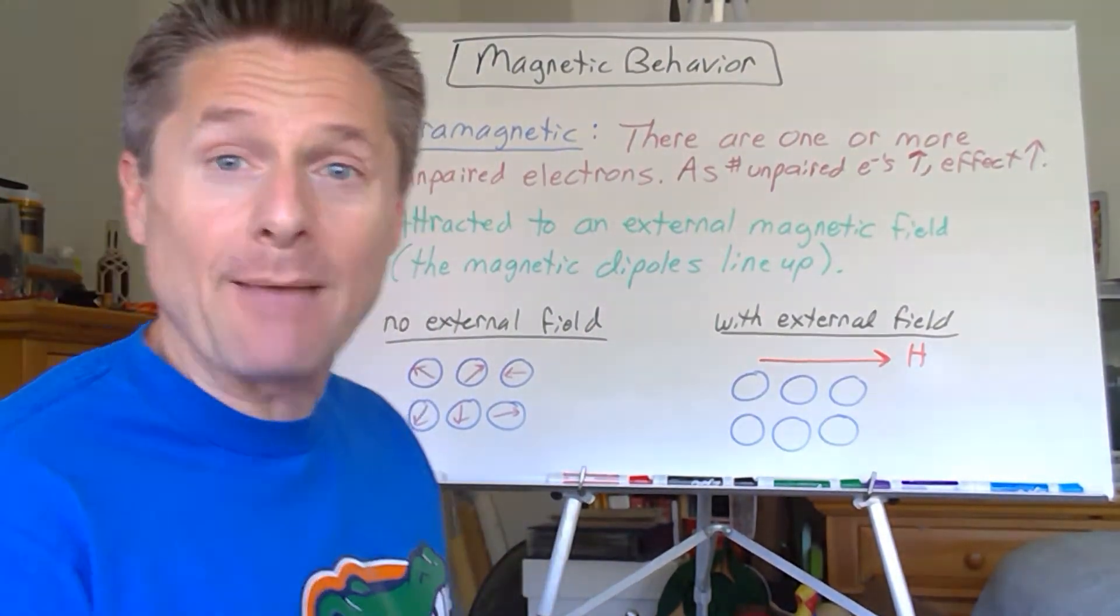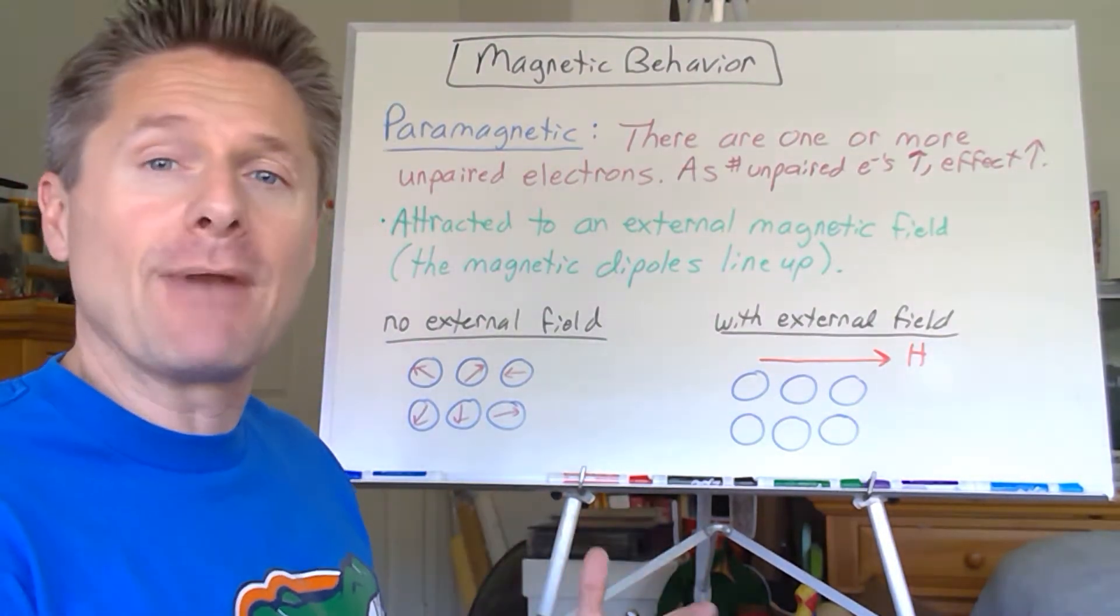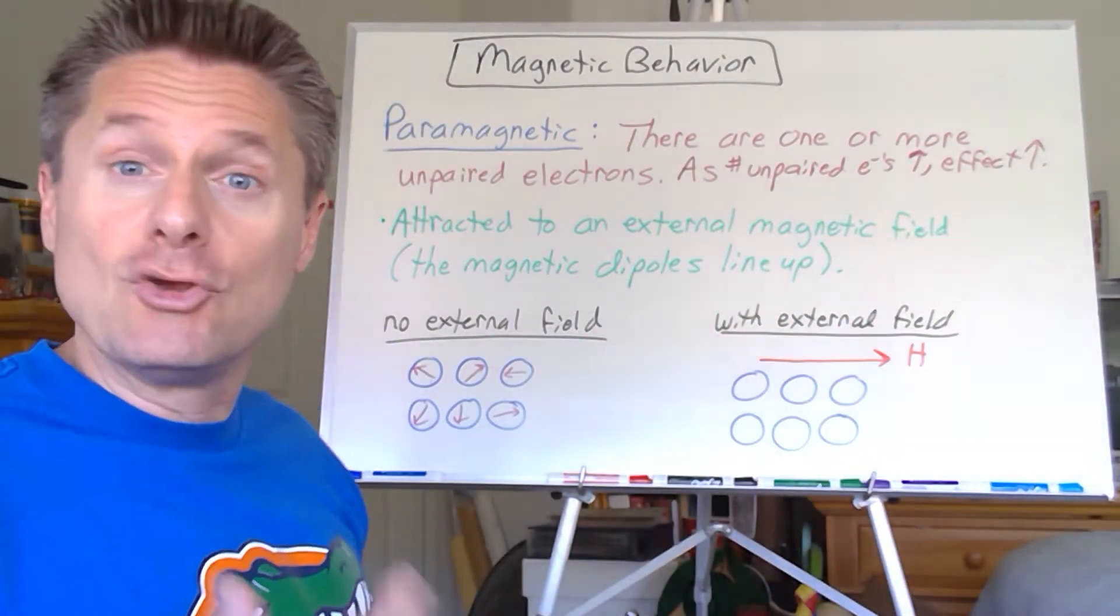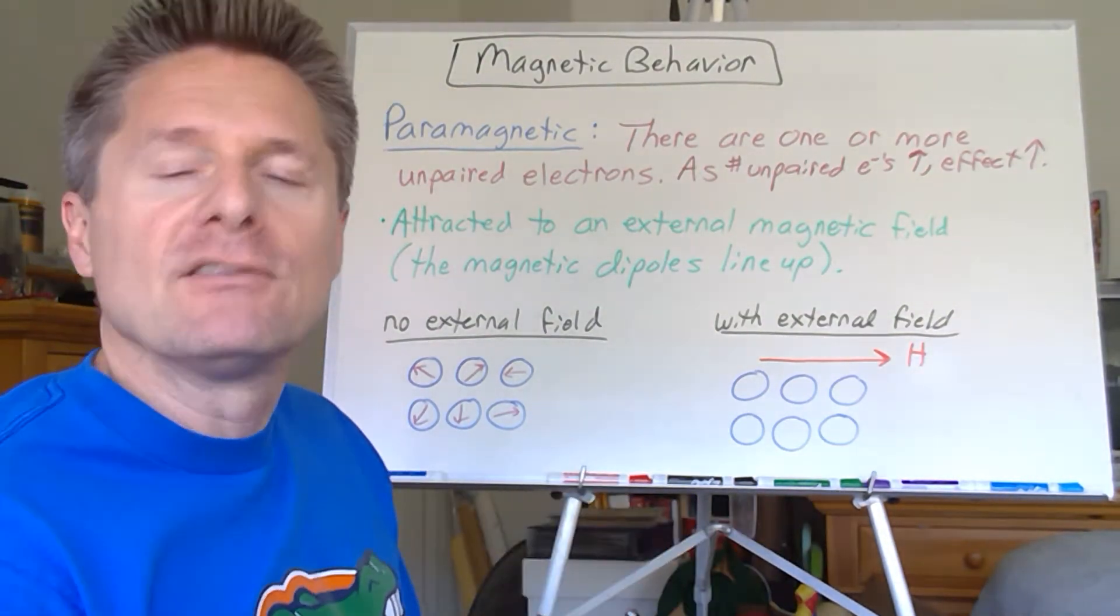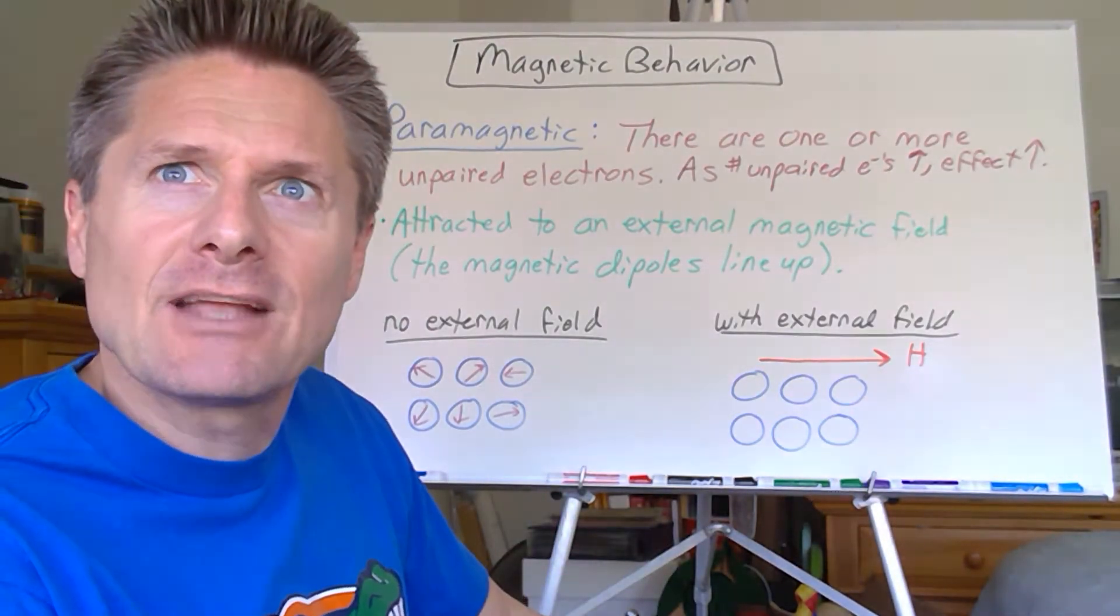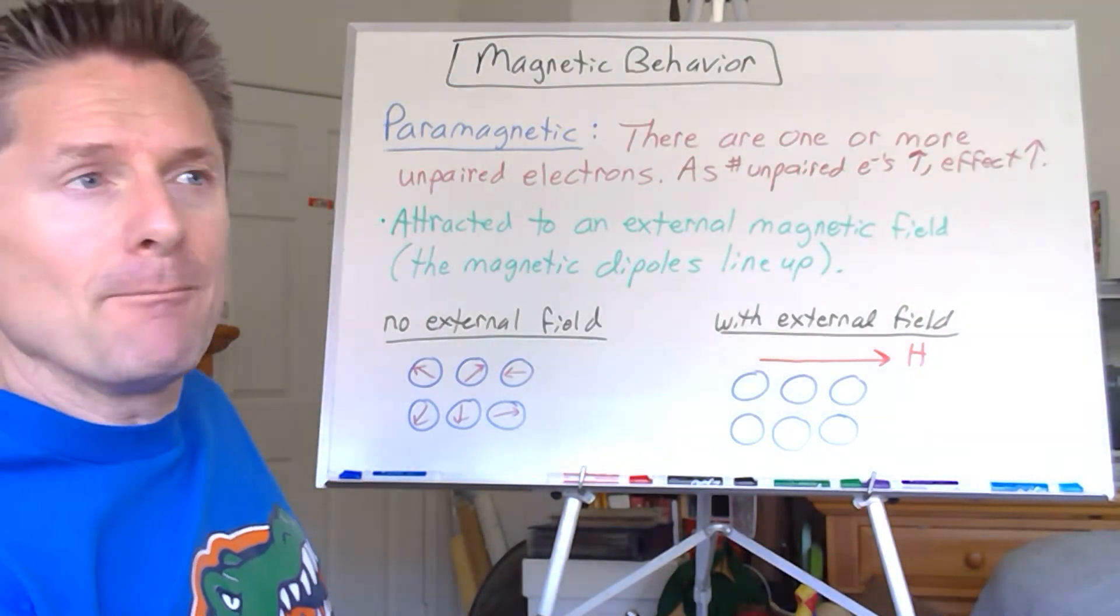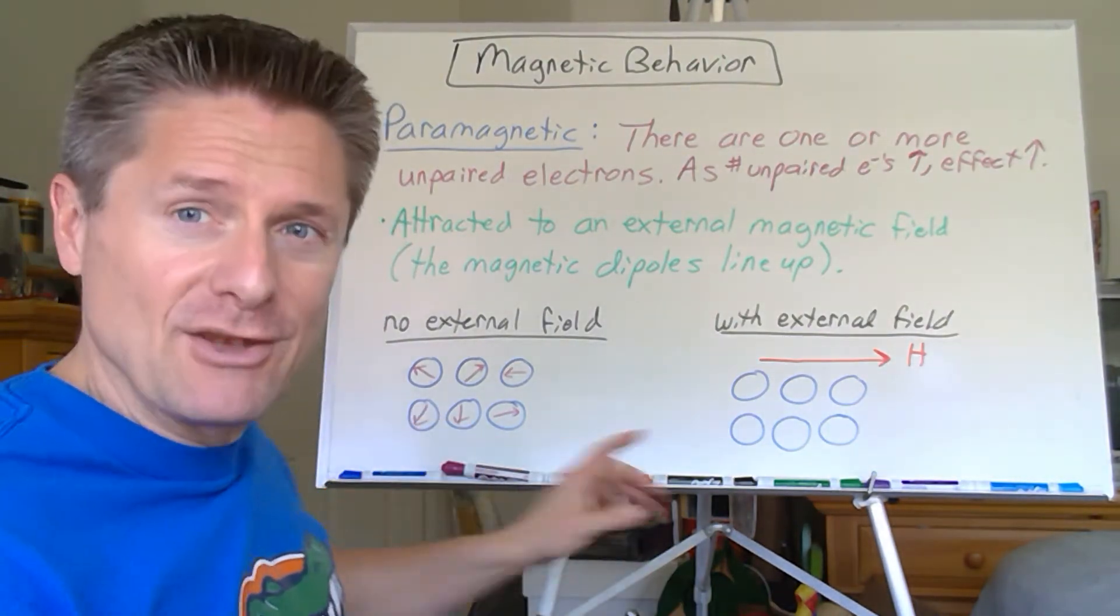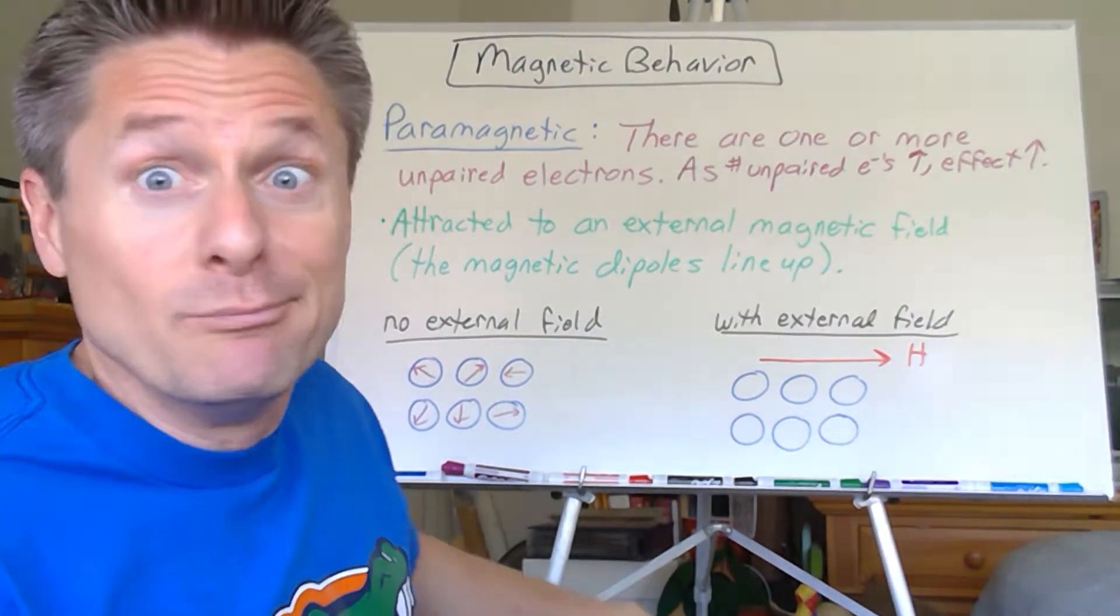We can measure these in labs. You can actually tell how many unpaired electrons a particular atom has based on how it interacts with an external magnetic field. You can actually determine electron configurations based on experiments. In undergrad I did EPS, electron paramagnetic spectroscopy. It had to do with flipping electron spins.